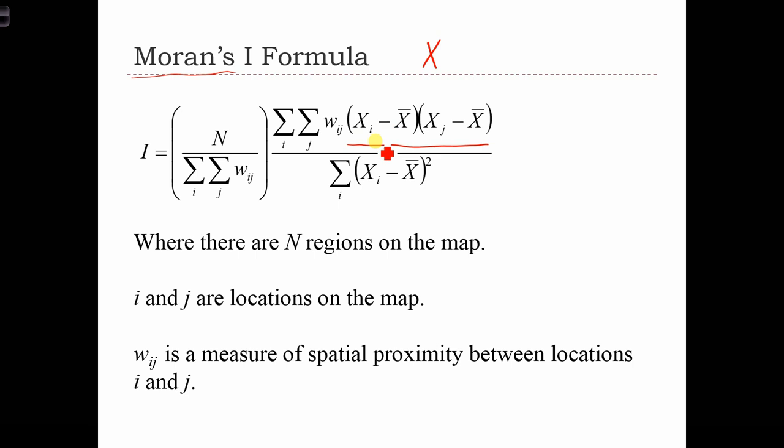In this case, what we're looking for in the cross-product is whether two locations of x are high at the same time or low at the same time.